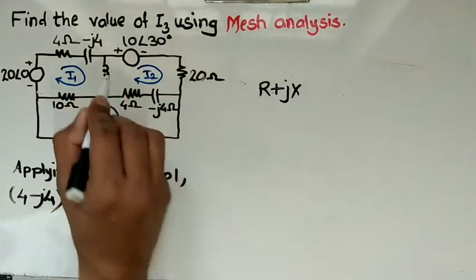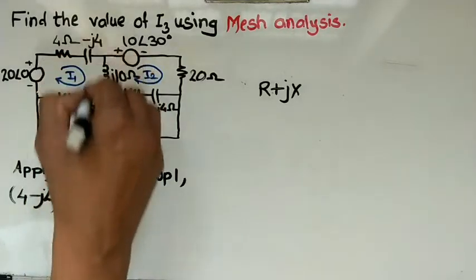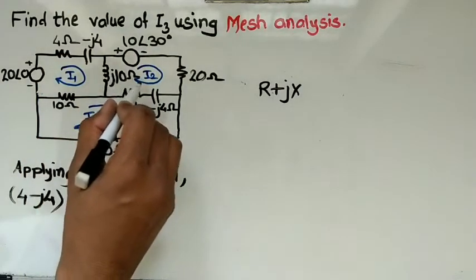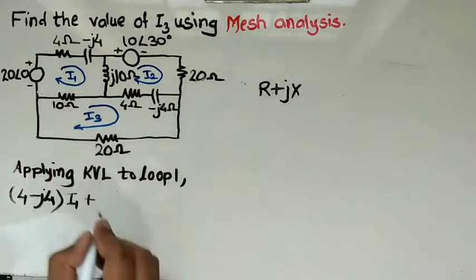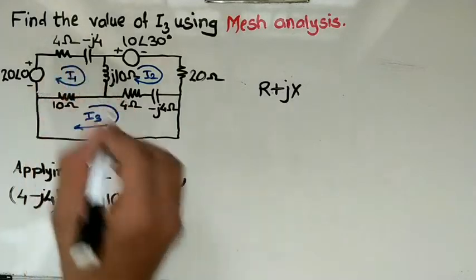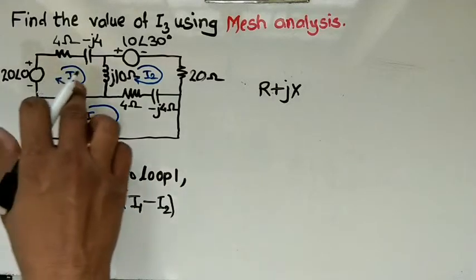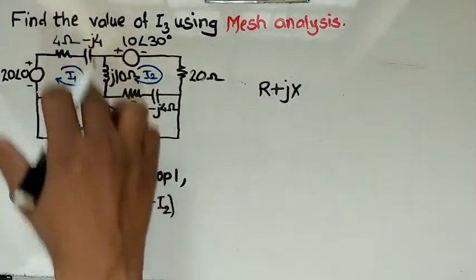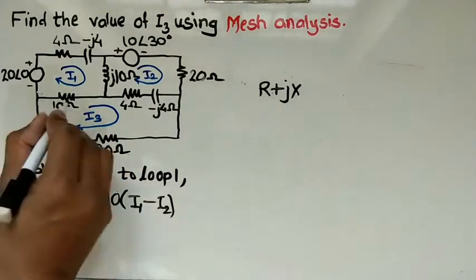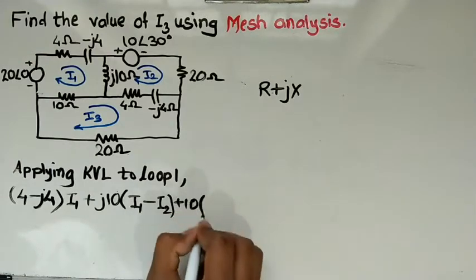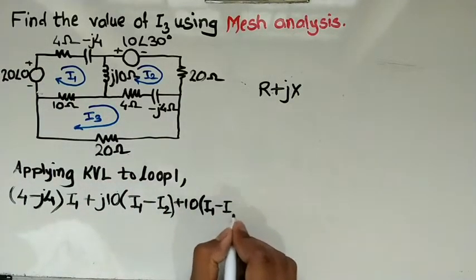The next element is j10 ohm inductance. Through this reactance, both I1 and I2 are flowing, so we write plus j10 times (I1 − I2), because we are writing for Loop 1 and the direction of I1 is downward while I2 is upward — they are opposite to each other. And for the 10 ohm resistance, I1 and I3 are also opposite, so it is 10 times (I1 − I3).